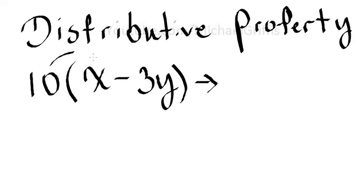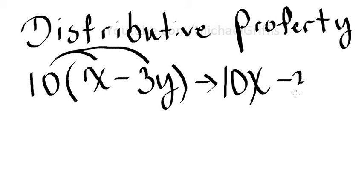So we end up with 10x minus 30y. It's 10 times x, 10 times 3, which gives us 30y.